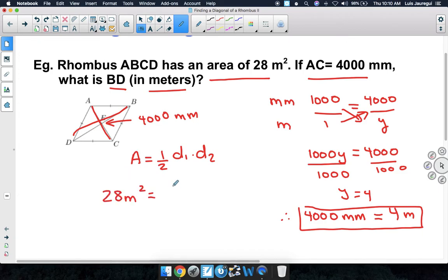We're going to say that this is equal to 1 half times one of the diagonals, which in this case we happen to know is 4,000 millimeters, but we already know that this is 4 meters, so we're going to say that this is times 4 meters times the other diagonal, which we're going to say is simply X for now.